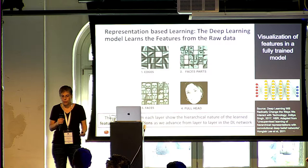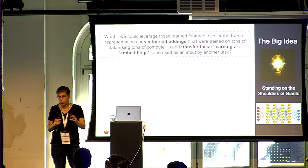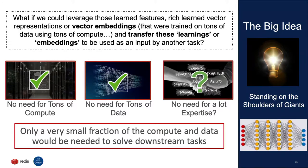The big idea with embeddings and transfer learning: what if we could leverage these learned features — rich vector representations or vector embeddings, just vectors of floating point numbers — that were trained on tons of data using tons of compute by the Facebooks and Googles of this world, and transfer that learning as input for another task? For free, or at low cost. It's like the Matrix — you load a cassette and suddenly you can do karate — but for artificial intelligence. You need only a small fraction of compute and data to solve the downstream task.